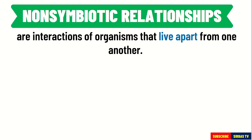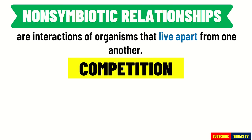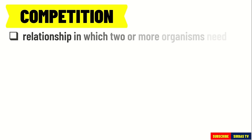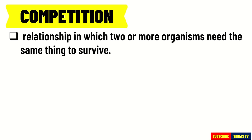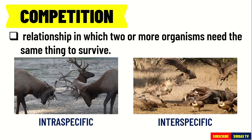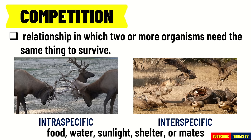Examples of non-symbiotic relationships are competition and predation. Competition is a relationship in which two or more organisms need the same thing to survive. The competition can be between the same species, called intraspecific competition, or different species, called interspecific competition. The organisms are competing or fighting for common resources like food, water, sunlight, shelter, or even mates.